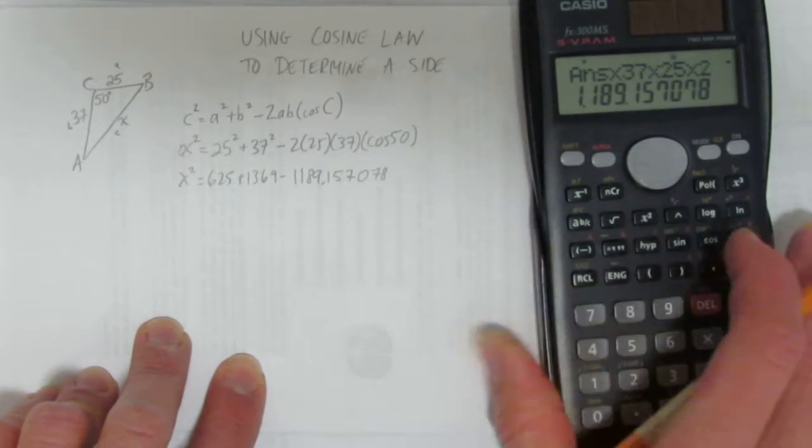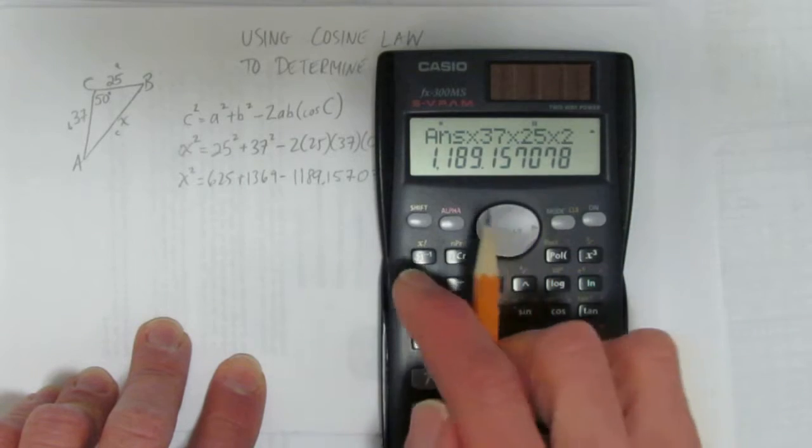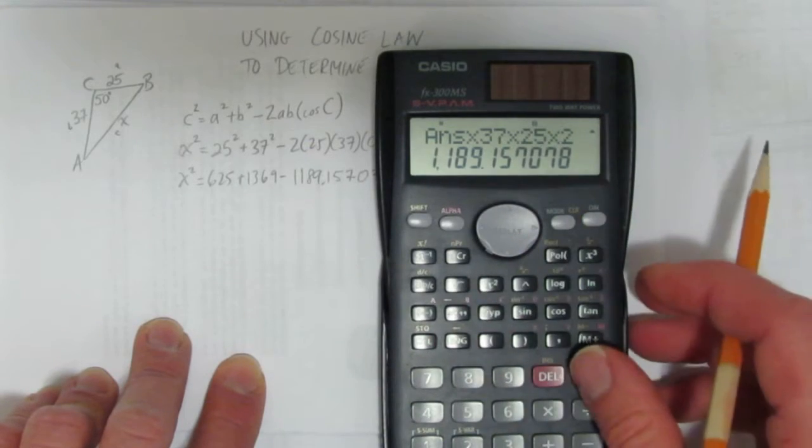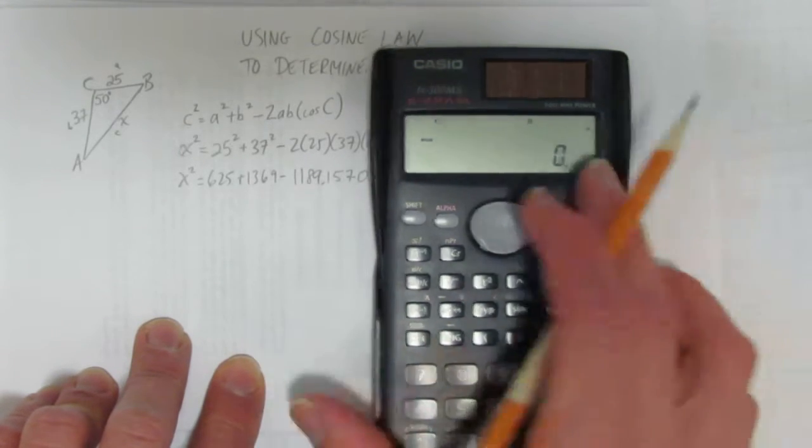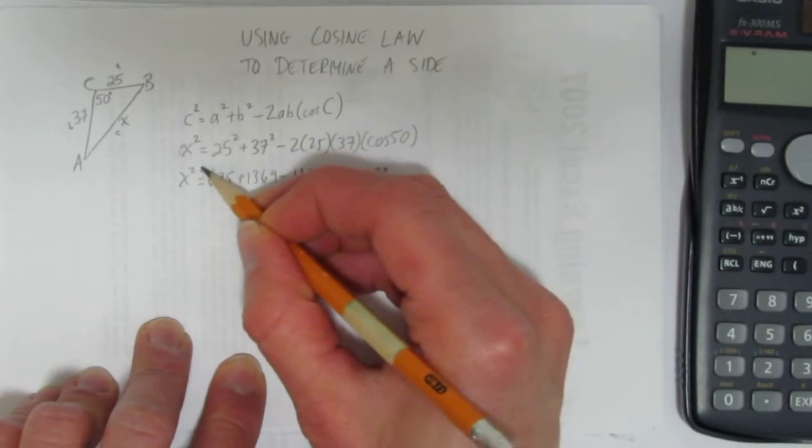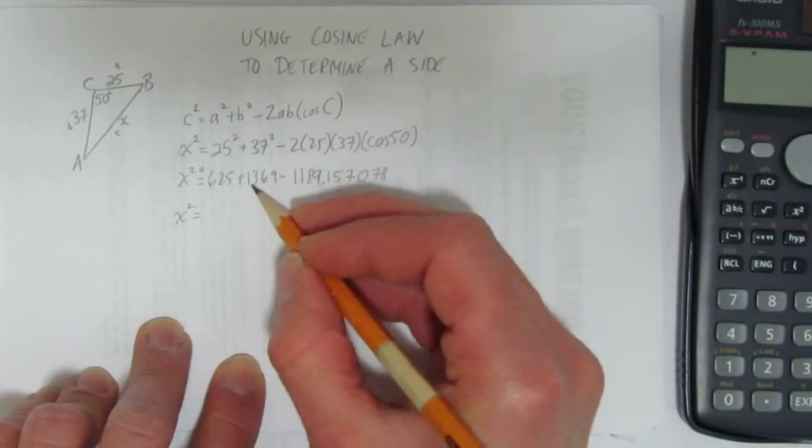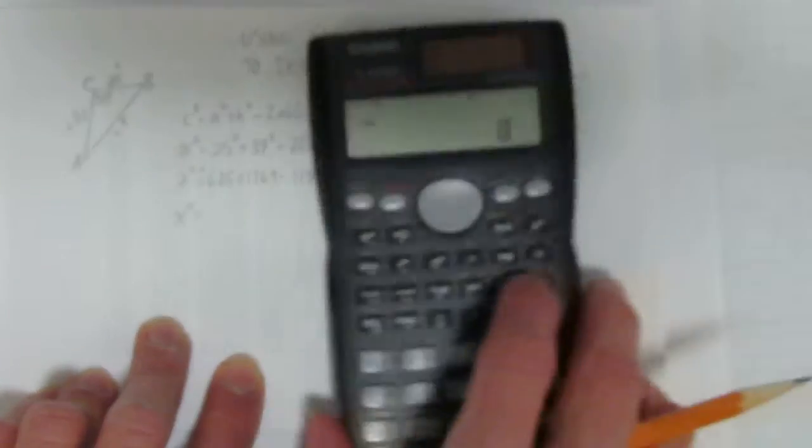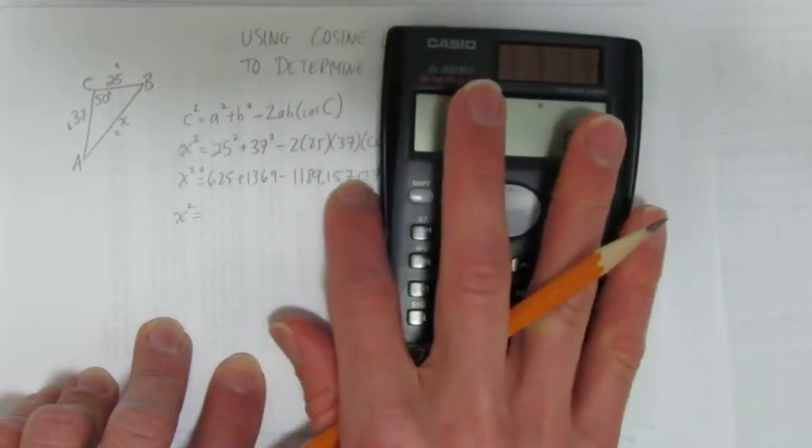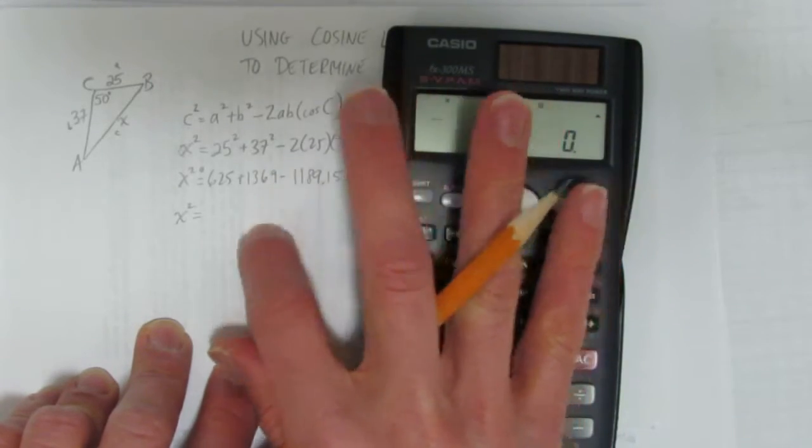1189.157078. And even though it might not be obvious, this number here, even though I took all the decimals, the calculator would have definitely had to round, which means I need a rounding dot here. On my next line though, I won't, because I'm going to do this plus this, take away this, which is going to give me an exact value.